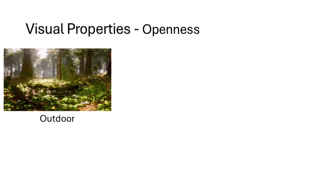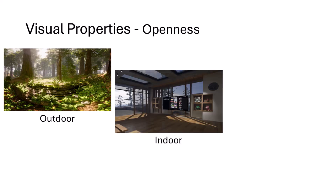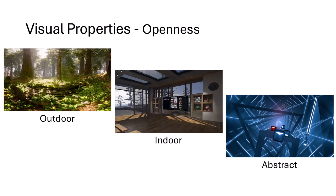There's not enough time to describe each property in detail, but let's explore openness, which describes whether a scene is enclosed. At a high level, VR scenes might be outdoors, like a forest or a city center. Scenes can be indoors, like home or office environments. And finally, scenes can be abstract, where the environment is neither indoors nor outdoors.